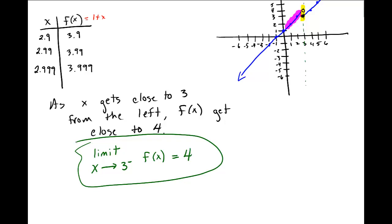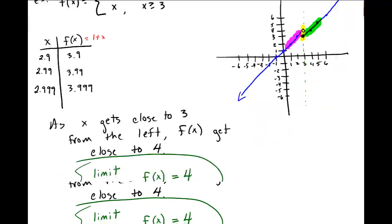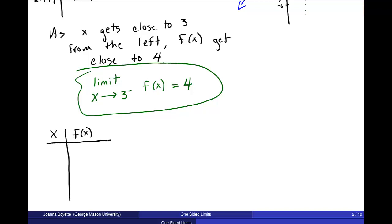Now let's look from the right side of the graph. I want to look at values coming from the right, using a t-table. If my x values are getting closer from the right, they start at maybe 3.1, then 3.01, 3.001.